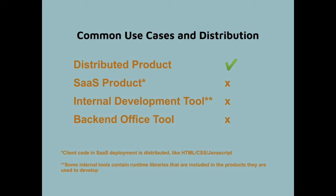Different levels of process for different use cases make sense for open source licenses. Most companies use a lot of open source software on the back end that they never distribute. This might include server-side software-as-a-service software, but also development tools or desktop utilities for workers like browsers and desktop operating systems, or internal business systems like payroll and accounting software.